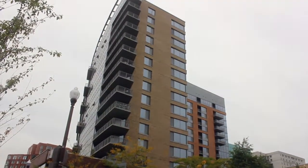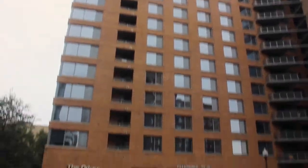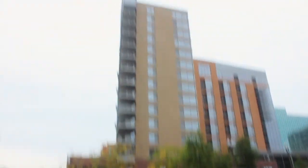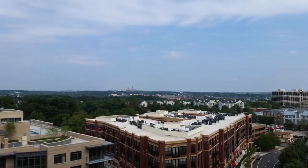The Odyssey is 17 stories high and has 274 units ranging from studios all the way up to three bedroom plus dens. The best units in the Odyssey are those facing north towards D.C. and towards the National Cathedral. Those offer the best views and usually come with balconies.